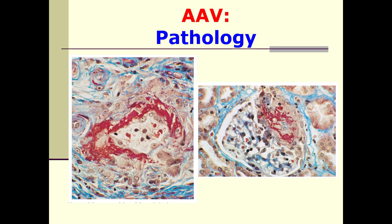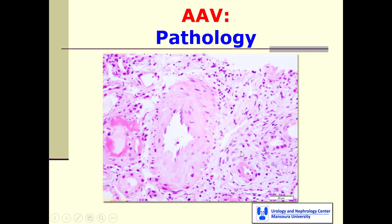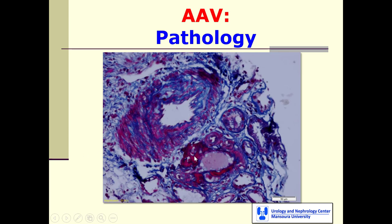Regarding pathology, the classic findings include fibrinoid necrosis of the vessel and necrotizing glomerulonephritis with crescents. Shown here from our center — Urology Center, Mansoura University — is crescentic necrotizing glomerulonephritis, and the vessel clearly shows fibrinoid necrosis.